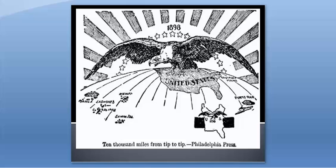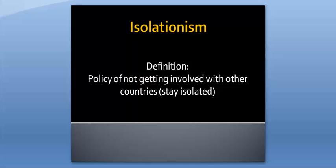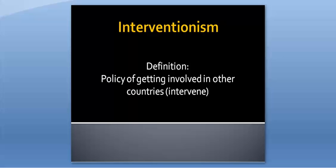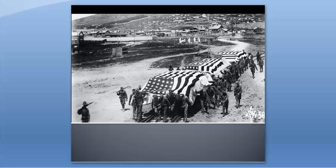Two final definitions for the notes are interventionism and isolationism. Both of these describe foreign policies during the Gilded Age and Progressive Era. Isolationism is the policy of staying isolated, or not getting involved in the affairs of other countries — when a country practices isolationism, they do not have many interactions with other countries. Interventionism is the opposite: when a country is interventionist, it intervenes or gets involved with the affairs and issues in other countries. During the Progressive Era, most U.S. foreign policy was interventionist. Following the Progressive Era, America moved to a more isolationist policy.